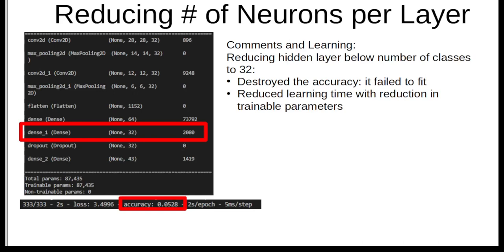I also tried reducing the number of neurons per layer. Going into the hidden layer, I reduced the number of neurons to a number which was below the number of classifications of 42 sign types, and that reduced the accuracy. It wasn't able to train appropriately, it failed to fit, and the accuracy was about 5%. It's essentially a network that failed.